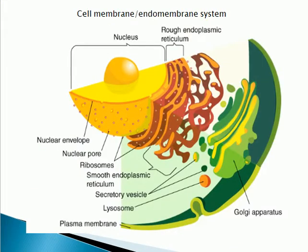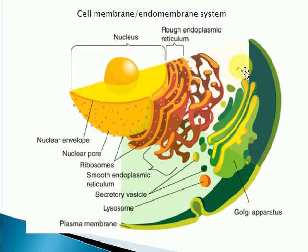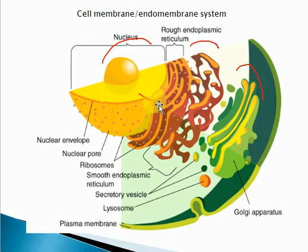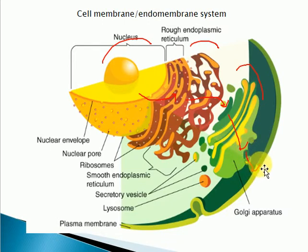Looking at this diagram of the cellular endomembrane system, you can see the nucleus, the endoplasmic reticulum, and the Golgi apparatus. The molecules formed in the nucleus are transported along the endoplasmic reticulum, they reach the Golgi where packaging takes place, and finally the packaged proteins are sent to further destinations. This entire system is called the endomembrane system or the cell membrane system.